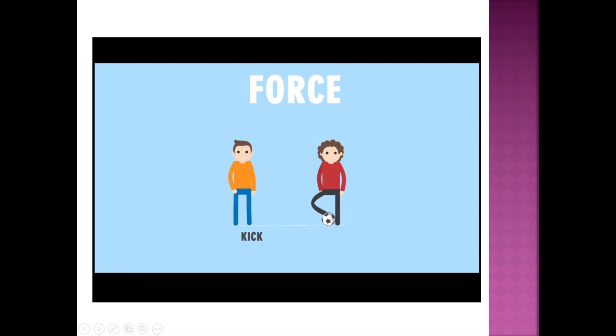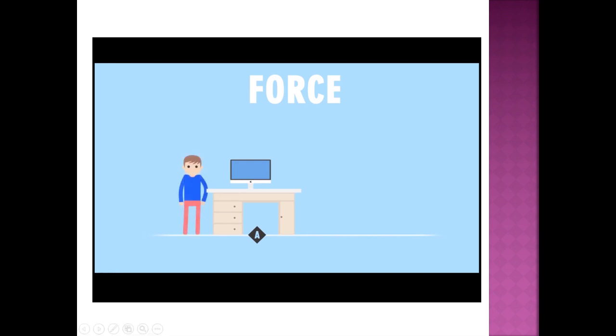Now suppose that we have a desk at point A and a person wants to move this desk from point A to point B. How will he do that? Here he pushed the desk toward B. In this case we say that the person applied a force on the desk in order to shift it. So the push here is the force that the person applied on the desk.